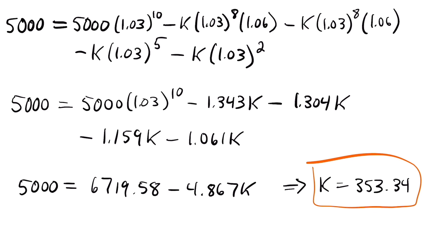Combining the like K terms, we get 5,000 equals 6,719.58 minus 4.867K. Subtracting 6,719.58 from both sides and dividing by negative 4.867, we find K equals $353.34. That is how much Conor withdrew each time he made a withdrawal. In the end, it's all about setting up the timeline, writing the basic cash flows equation, and accounting for any extra calculations like a penalty. Being able to set up those equations is a very important skill. If you have any questions, leave them in the comments below.